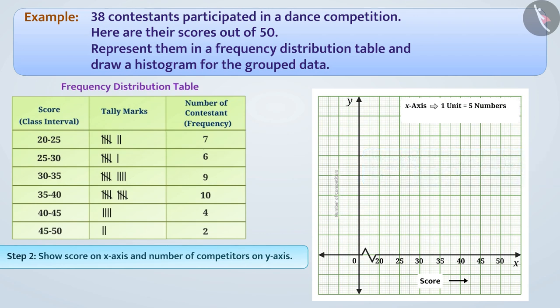Similarly, we will show the number of competitors on the y-axis by taking 1 unit is equal to 2 contestants. The greatest frequency in the frequency distribution table is 10. So, we can take the number of contestants on the y-axis, 1 unit more than it, that is, 12.